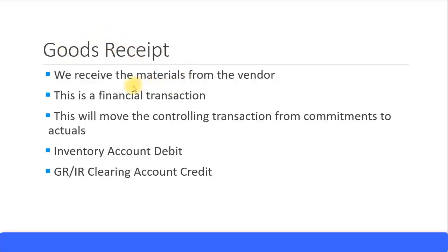We are receiving the goods from the vendor, so we have a movement in our inventory — our stock levels are increasing because we are receiving new stocks. This is a financial transaction: on the balance sheet, the inventory amounts will increase. This transaction will affect your company code and your GL accounts.